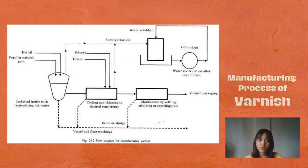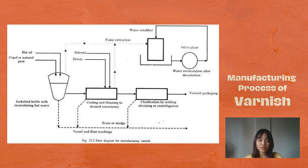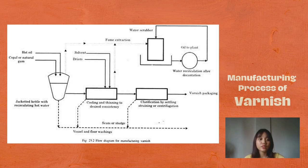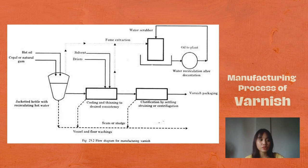The third step is solvent addition. Once the oils and resins are properly mixed and heated, solvents are added to reduce the viscosity of the varnish, making it easier to apply and providing a smoother finish when dried. The fourth step is the addition of additives — various additives are incorporated to improve performance; for example, drying agents may be added to accelerate the curing process, while UV stabilizers help protect the varnish from sunlight-induced degradation. The fifth step is filtration, where the varnish mixture is filtered to remove any impurities or particles that may have formed during the manufacturing process, ensuring a consistent and high-quality product.